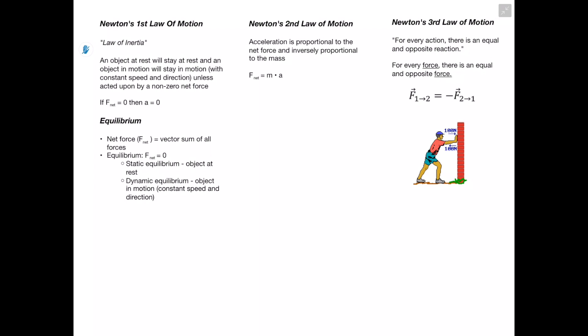Newton's First Law of Motion is called the Law of Inertia: an object at rest will stay at rest and an object in motion will stay in motion unless acted upon by a non-zero net force. If net force equals zero, acceleration equals zero — this is equilibrium. Static equilibrium is an object at rest; dynamic equilibrium is an object moving at constant speed in a straight line.